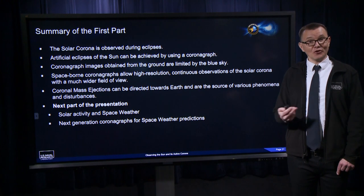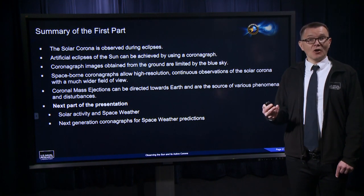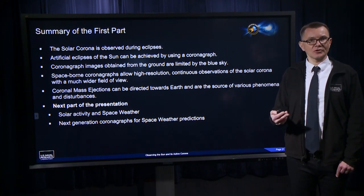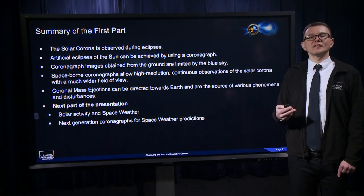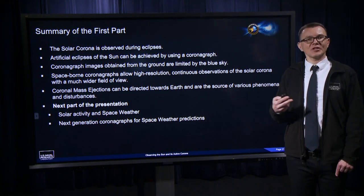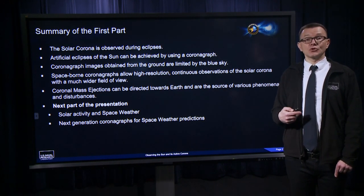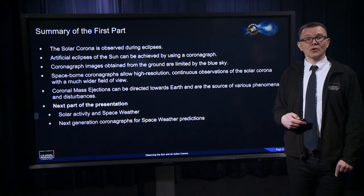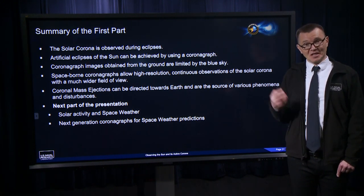To sum up the first part of this video: the solar corona is sporadically observed during eclipses, but can be continuously observed using space-borne coronagraphs. The sun and its corona is active, and its activity is mostly governed by the sun's magnetic field. Coronal mass ejections are transient magnetic structures that can be directed toward Earth and are the source of various phenomena and disturbances. This is what my colleague Dr. Damien Chua will address in the next part of this video. Thank you for your attention and stay tuned.